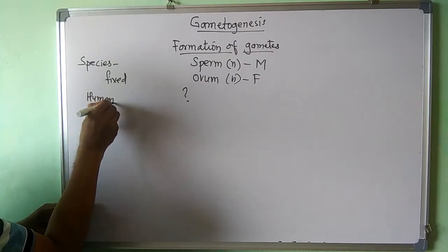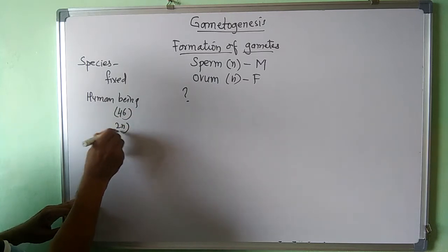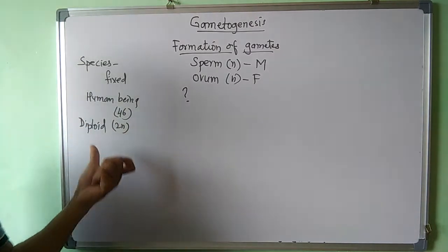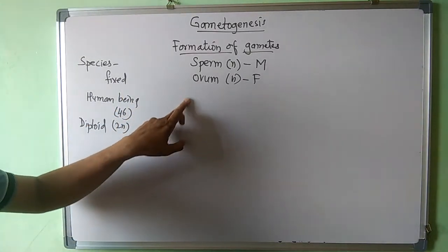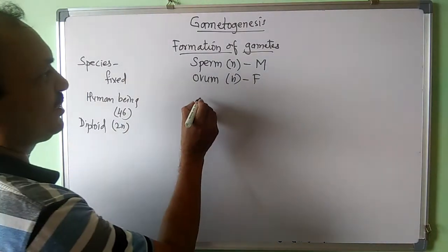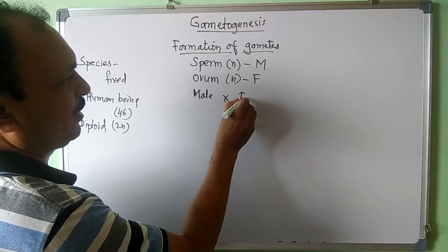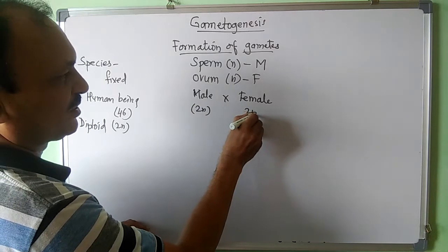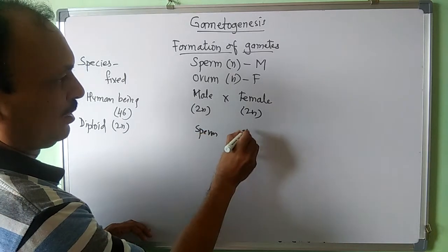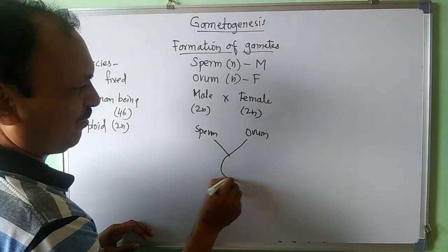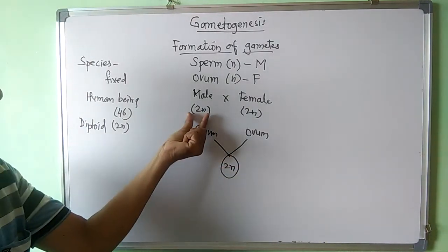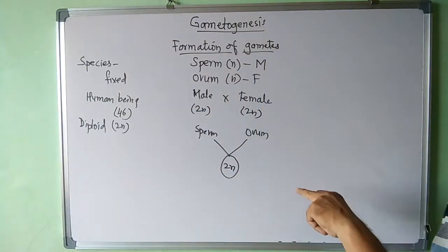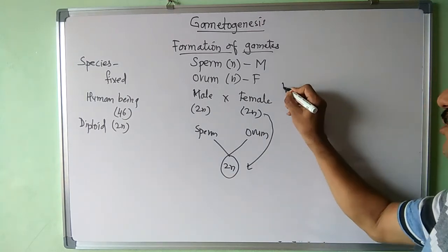A human being carries a fixed chromosome number. Each and every species has a fixed chromosome number. In a human being, the male and female are both 2n, that is 46 chromosomes. The sperm and egg are gametes, and they unite to form offspring that is 2n. When two 2n numbers combine, they would form 4n — but that doesn't happen. The chromosome number is restored by the process of meiosis.